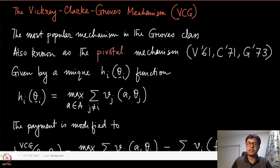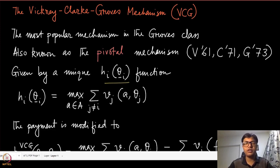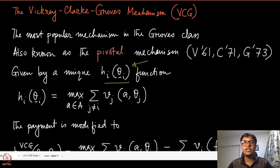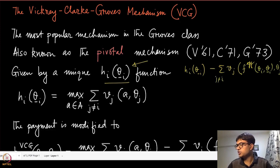How does it belong to the Groves class? If you look at the specific h_i(θ_{-i}) function, all mechanisms in the Groves class essentially satisfy the allocative efficiency property — they all maximize the sum of the valuations of all agents by choosing their allocation. The only difference between mechanisms in the Groves class is in their payments, distinguished by the choice of h_i(θ_{-i}). The payments are h_i(θ_{-i}) minus the sum of valuations of all agents at the efficient allocation, summed over all j not equal to i.